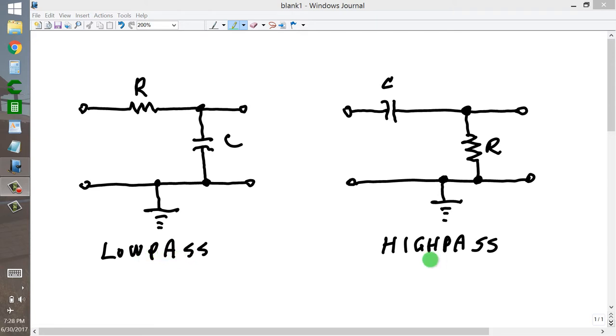The cutoff frequency depends on the values of the resistance and the capacitance. The high-pass filter, on the other hand, tends to discriminate against the low frequencies and let the higher frequencies through more easily.